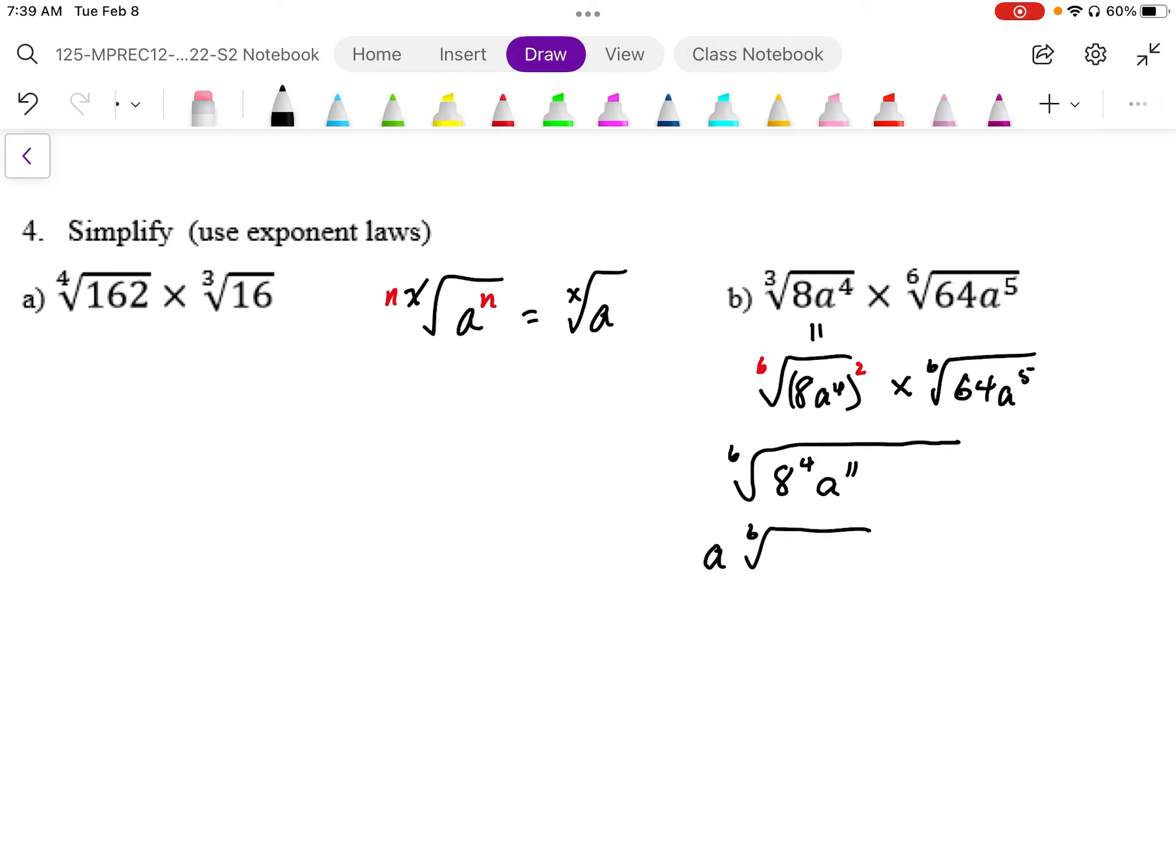6. And working out 8 to the power of 4. So 8 to the power of 4 is equal to 4096.